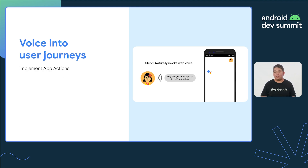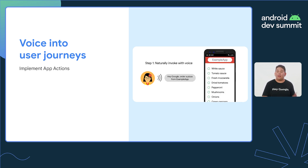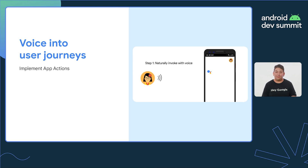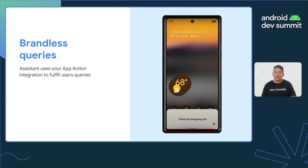By implementing App Actions, you could streamline user journeys, where a user can share key information using their voice and be dropped into the correct section of the app, along with any parameters provided. This also helps eliminate the issue of searching through the dreaded sea of icons. When a user queries Assistant without using the brand name of a specific app, Assistant can now infer what app would best fulfill the user's requests and effectively route the user to that app. This is called a brandless query.